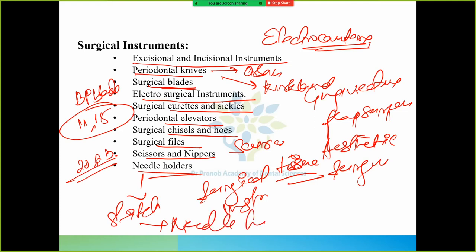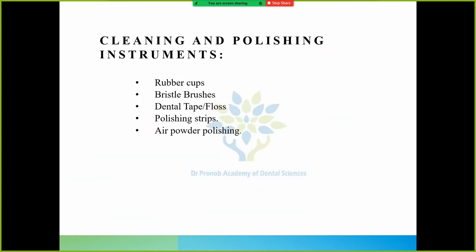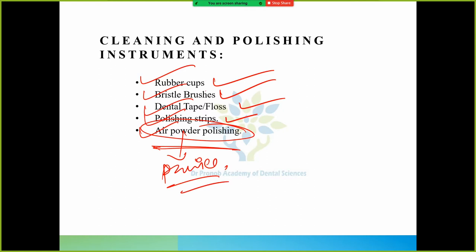More surgical instruments: Surgical chisels and hoes, surgical files, scissors and nippers, needle holders. You should be having the needle holder. Next, finishing and polishing instruments: Polishing strips we use, bristle brush we use, rubber cups also we use, air powder polishing. In air powder, what you use? Pumice. Pumice we use.